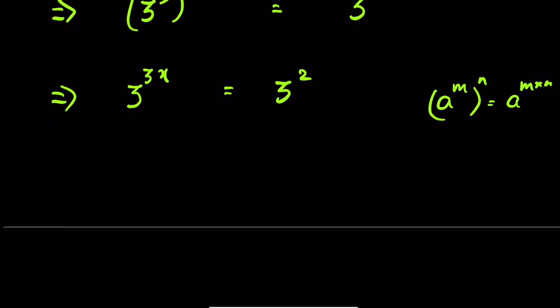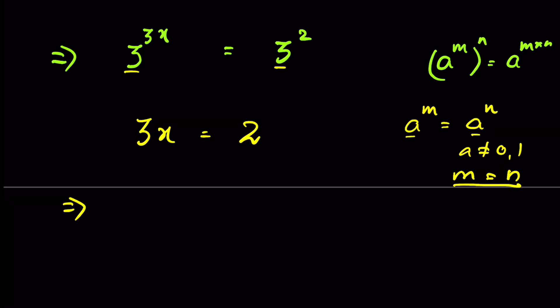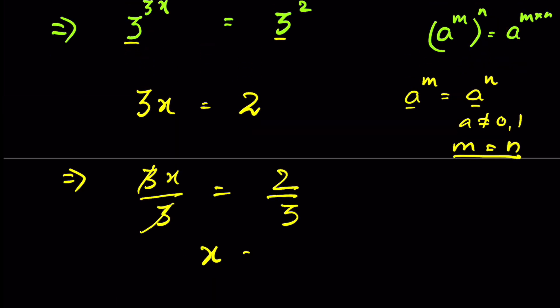Again there is a rule, if a to the power m is equal to a to the power n, and a is not equal to 0 or 1, in that case m is equal to n. That means 3x equals 2, where a is 3. We divide both sides by 3. So x is equal to 2 upon 3. We can also find this value by using log.